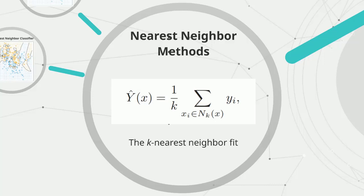Perhaps a linear model doesn't fit this data best. Let's look at nearest neighbor. The nearest neighbor method uses the observations in the training set closest in input space to x to form y-hat. Specifically, the k-nearest neighbor fit is defined using N_k(x), the neighborhood of x defined by the k closest points in the training sample. Closeness is measured by Euclidean distance. In other words, we find the k observations with x_i closest to x and average their responses. k can range from 1 to any number, changing the nearest neighbor approach accordingly.